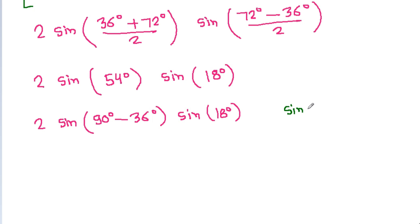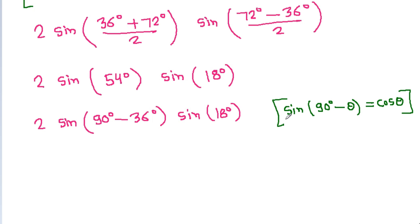Now, sin 54 degrees equals sin(90 degrees minus 36 degrees), and since sin(90 minus θ) equals cos θ, this becomes cos 36 degrees. So the expression is 2 times cos 36 degrees times sin 18 degrees.